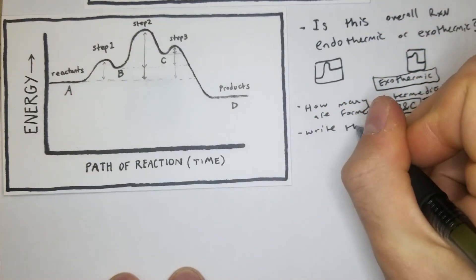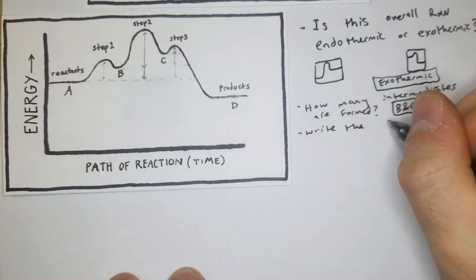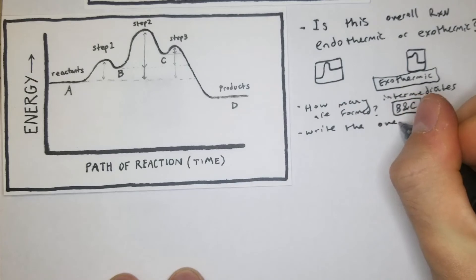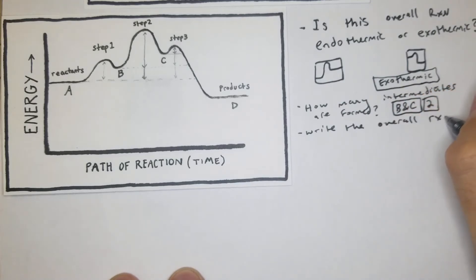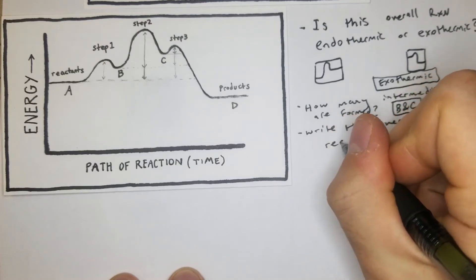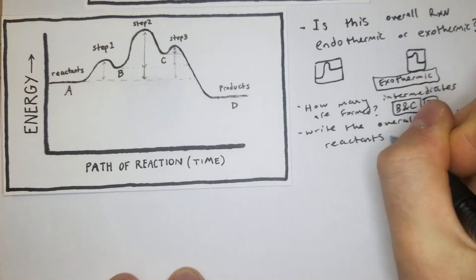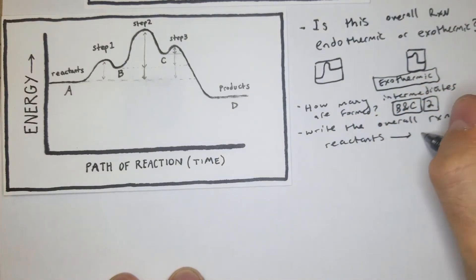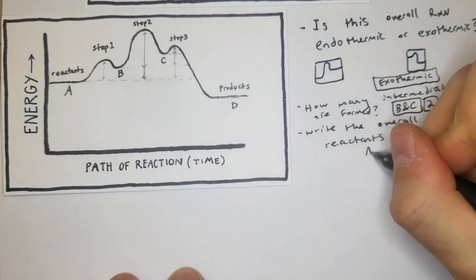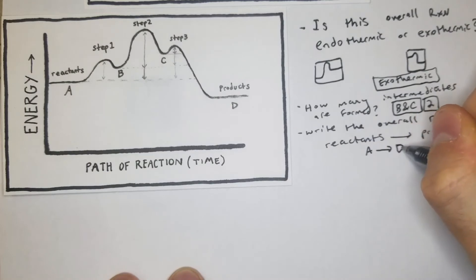You might also be asked to write the overall reaction in the form of reactants yields products. That's simply A yields D, because we start with A and end with D, while B and C are the intermediates.